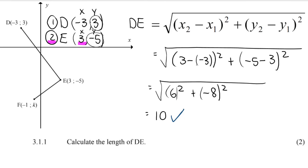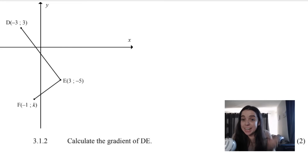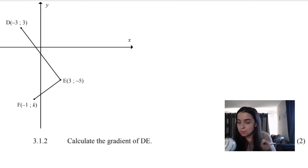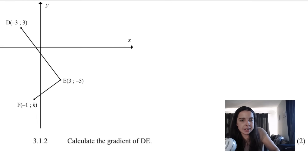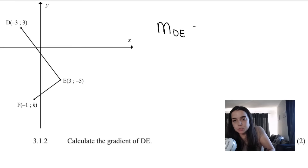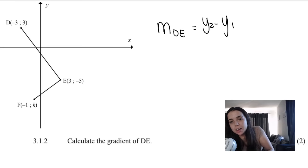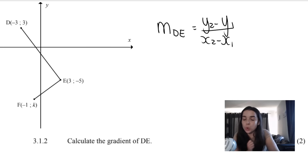You'll get a mark for your answer and a mark for substituting into the distance formula. My next question says: calculate the gradient of DE. So we're looking at the same straight line, the same two coordinates, now just calculating gradient. You should know that gradient is represented by the letter M and the gradient formula is Y2 − Y1 over X2 − X1.